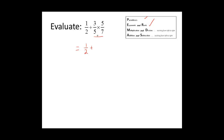We see that we have three-fifths times five-sevenths. We have a common factor in the numerator and denominator of five that we can divide out. Five divided by five is equal to one, and five divided by five is equal to one. So then we multiply our numerators together: three times one is equal to three, and one times seven is equal to seven.